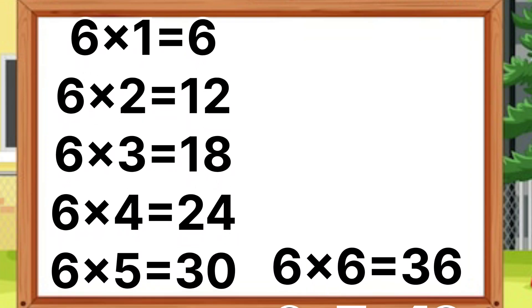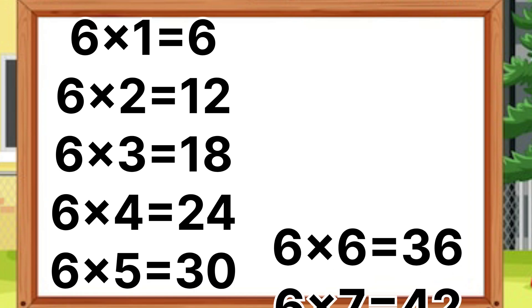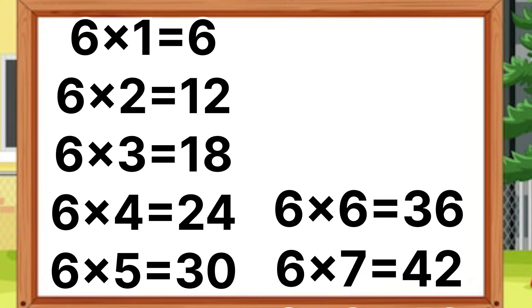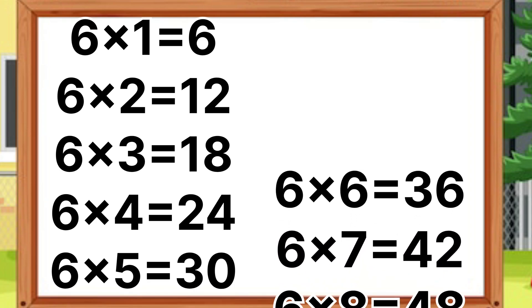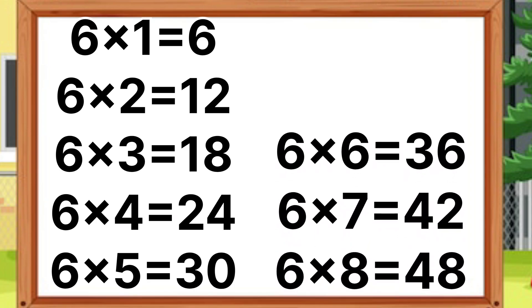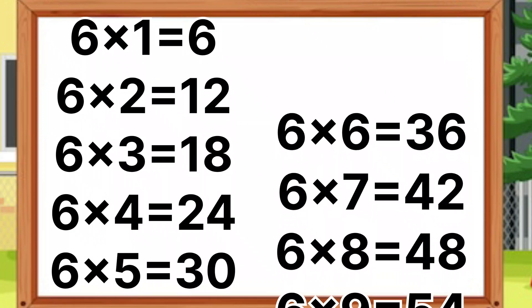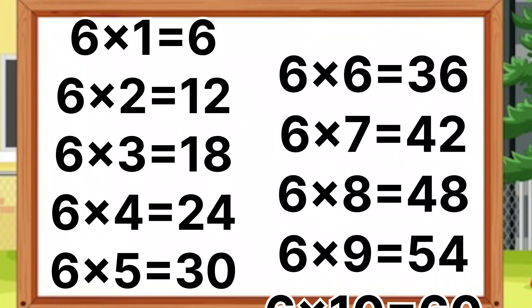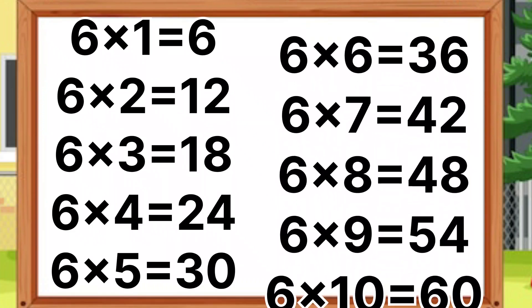Six sevens are forty-two. Six eights are forty-eight. Six nines are fifty-four. Six tens are sixty.